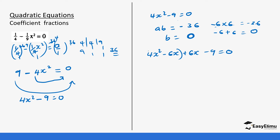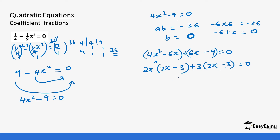Group the first two terms and the last two terms. The common factor in the first group is 2x, giving 2x(2x minus 3). The common factor in the second group is 3, giving 3(2x minus 3). Always ensure the values inside the brackets are the same. So we have (2x plus 3)(2x minus 3) equals zero.